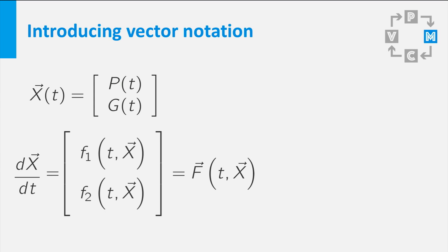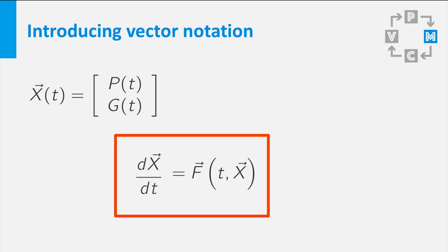So what have we got now? We have that the derivative of the vector function x is equal to a vector function f of time t and x. Any system of differential equations can be written like this, as a differential equation for a vector function.